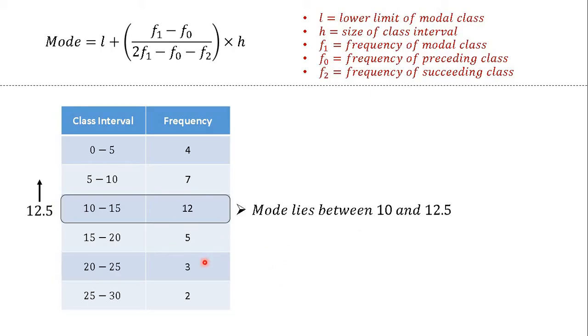And in this data, the value of these terms are: lower limit is 10, we have to look at the lower limit of modal class. And h is the class interval which is 5. f1 is the frequency of modal class which is 12. And f0 is the frequency of the preceding class which is 7. f2 is the frequency of the succeeding class which is 5.